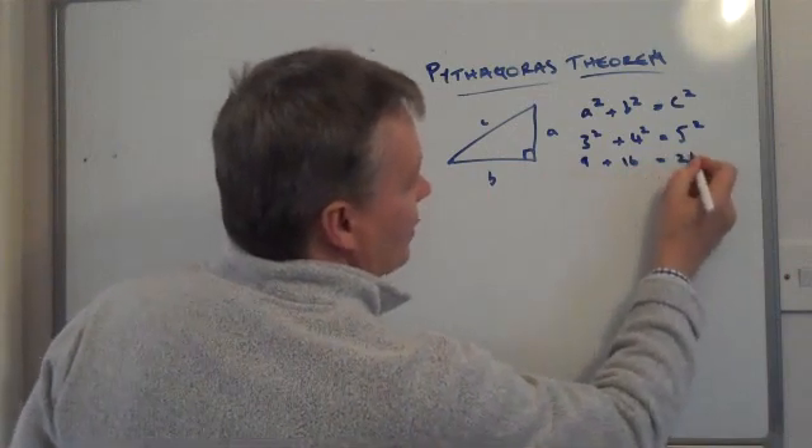3 squared is 9, 4 squared is 16, 5 squared is 25, and 9 plus 16 is 25, so 25 equals 25. So A squared plus B squared equals C squared.